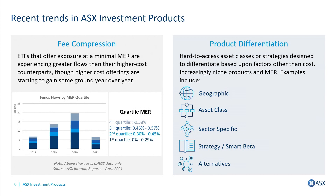In terms of recent trends with these products, there are two narratives: fee compression and product differentiation. On the fee compression side, we've seen investors predominantly flock to exchange traded products offering low-cost exposure to market — predominantly index tracking funds. That's not going to be a surprise to many of you on this webinar.